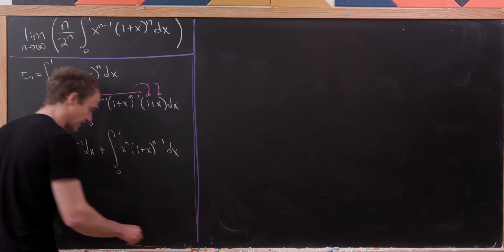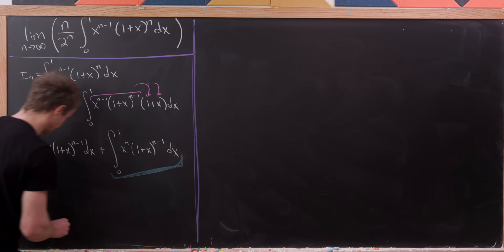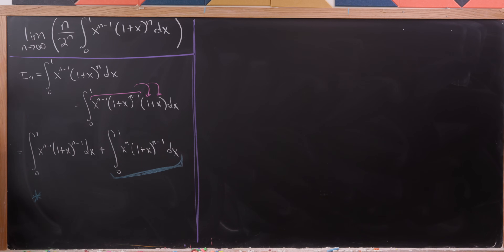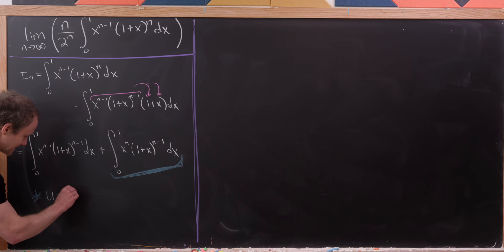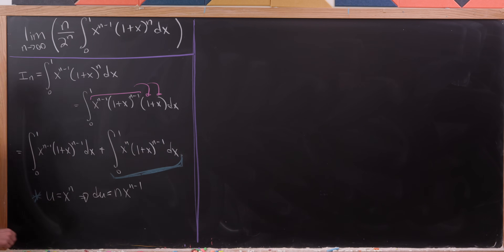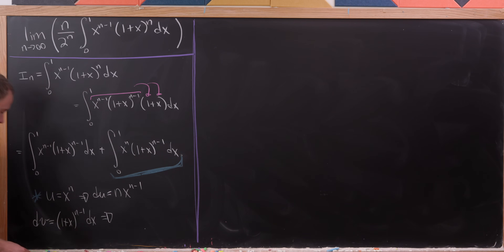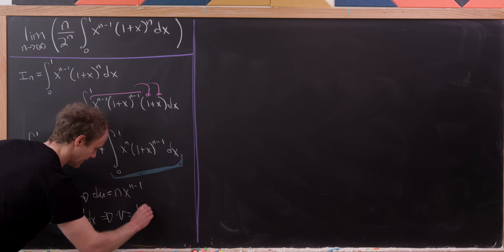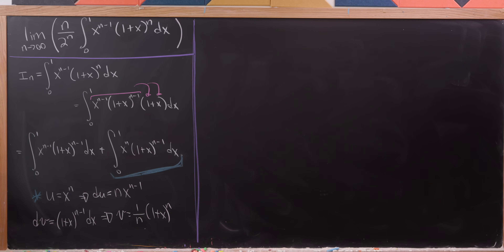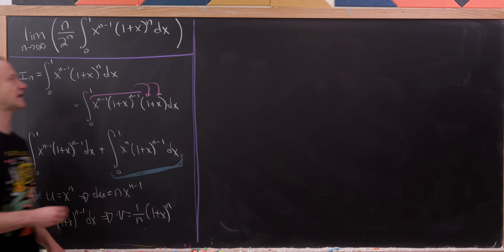Let's apply integration by parts to this blue underlined integral. We'll take u to be equal to x to the n, so du will be equal to n times x to the n minus 1. That means dv has to be 1 plus x to the n minus 1 dx, meaning that v is equal to 1 over n times 1 plus x to the n. Notice our vdu term will have x to the n minus 1 and 1 plus x to the n, so we will achieve I sub n again.